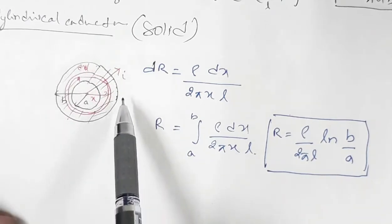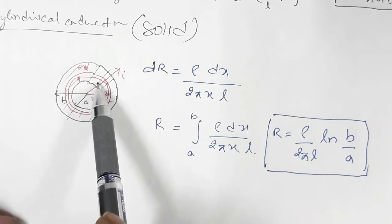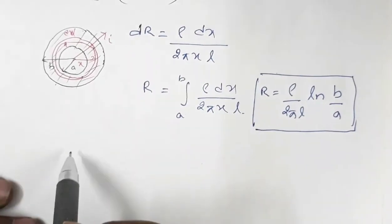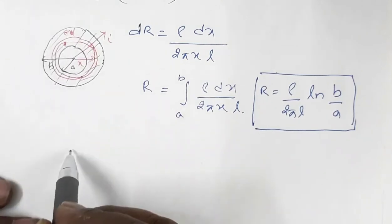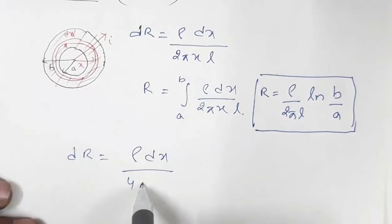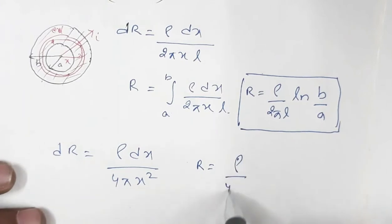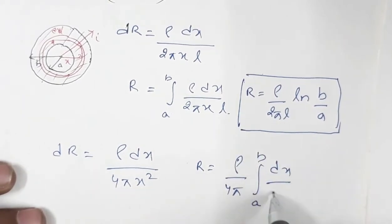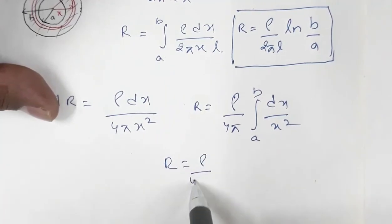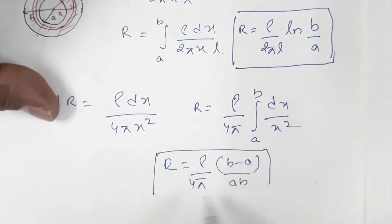Now, instead of a cylinder, consider a sphere. For the same figure, if this is a sphere with the inner hollow part of inner radius A and outer radius B, and current flowing radially outward, the resistance of this differential shell is dR equals rho dx divided by 4 pi x squared. Integrating from A to B gives R equal to rho divided by 4 pi, times (B minus A) divided by AB.